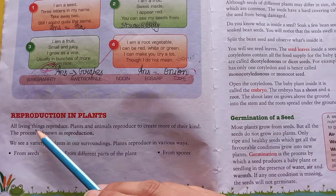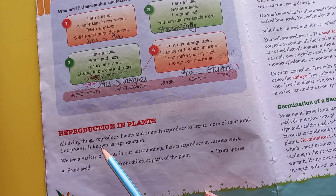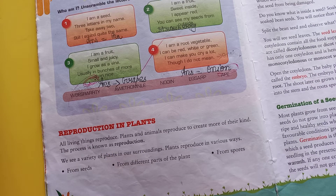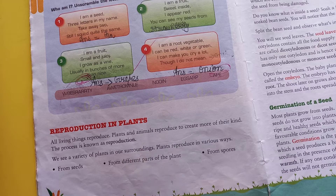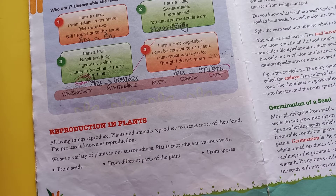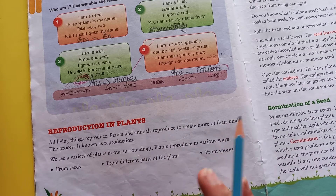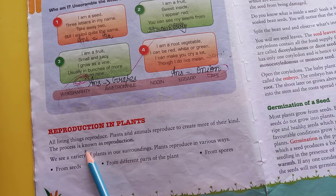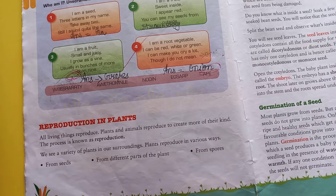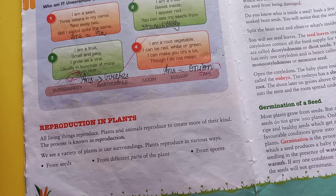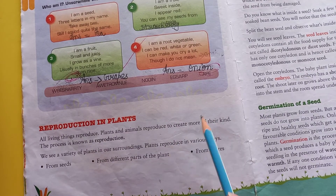Reproduction in plants क्या होता है? All living things reproduce. जो all living things होती है, वो reproduce होती है — आगे से आगे बनते हैं. Plants and animals reproduce to create more of their kinds — अपने तरह से. जैसे एक plant से उसका seed होगा, और उस seed से उसी तरह का plant बनेगा. So the process is known as reproduction. For example, mango tree के seed से ही new plant grow होता है — वो reproduction हो रही है.